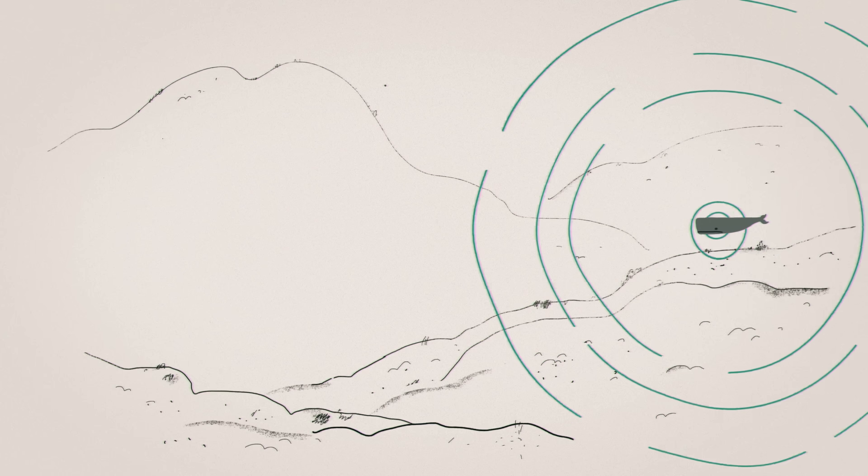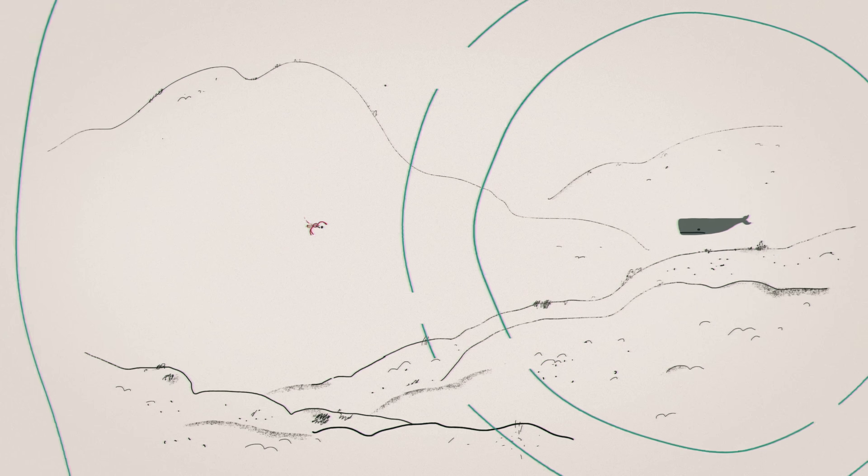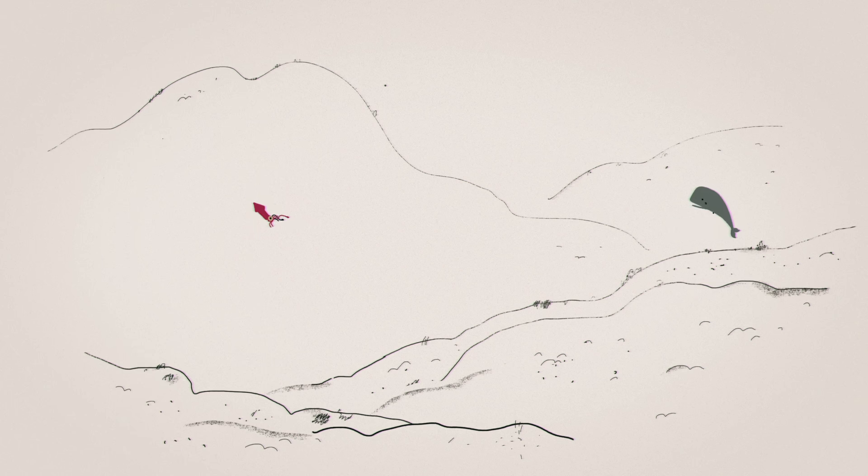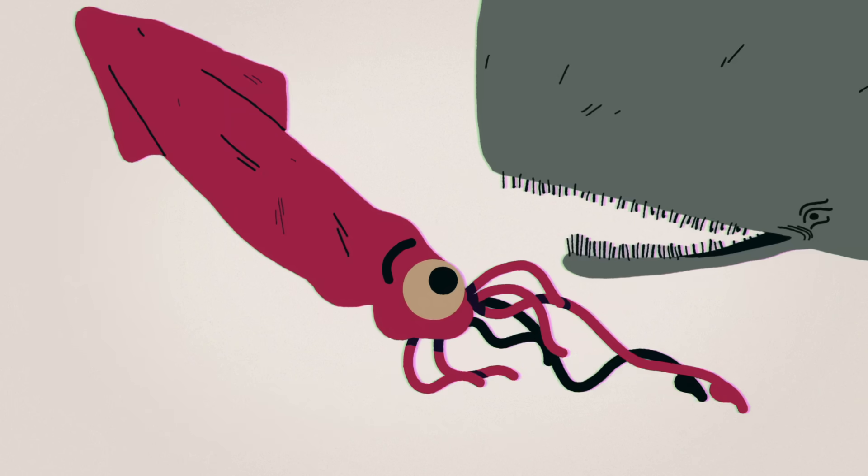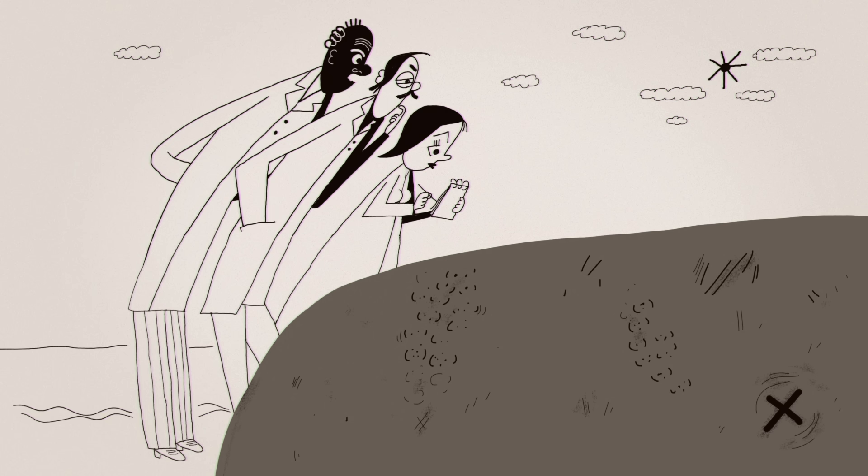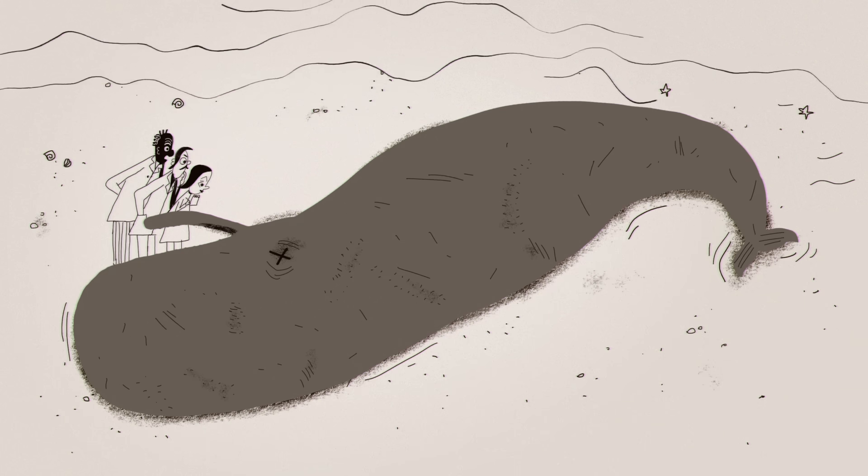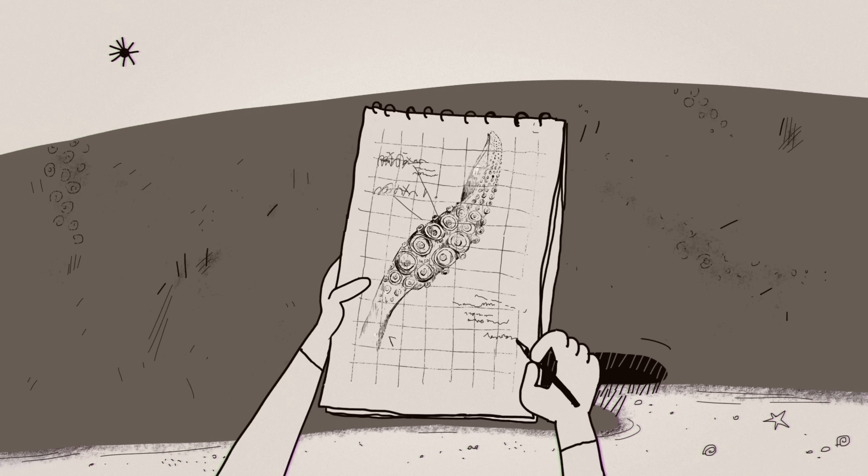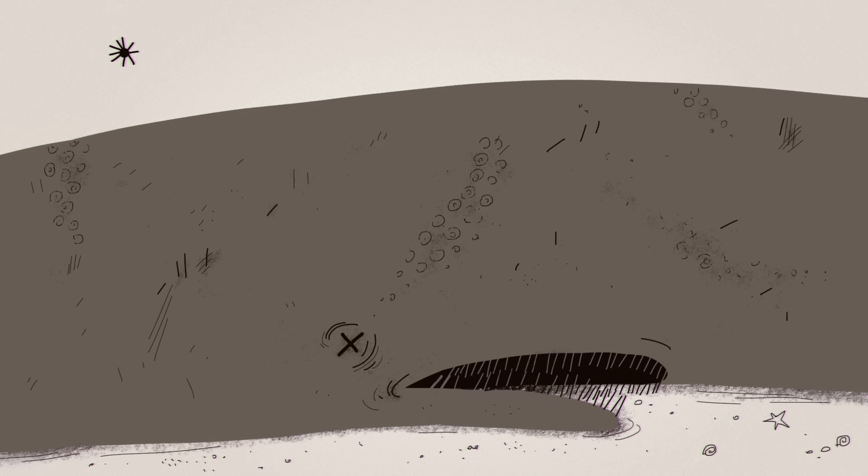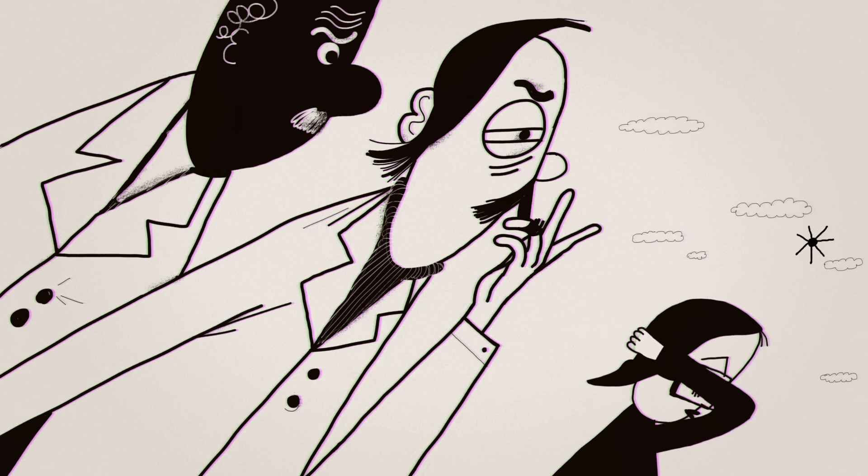Sperm whales use echolocation to hunt these squid for food, but even against this gigantic animal, squid can put up an impressive fight. Scientists know this because on the bodies of washed-up whales, they frequently find huge, round suction scars, emblazoned there by large, grasping tentacles.